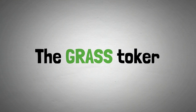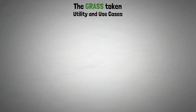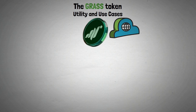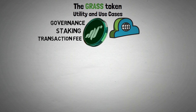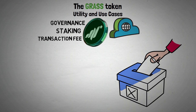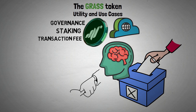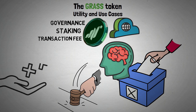Now let's look at the GRASS token. Utility and use cases: within the network, GRASS tokens will be utilized for governance, staking, and transaction fee payment. Users can vote on protocol updates and new features, among other governance decisions, and receive extra rewards by staking GRASS.